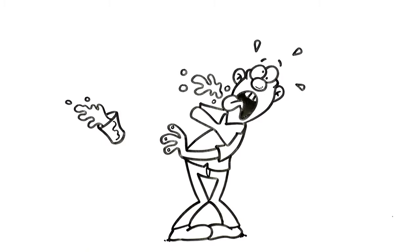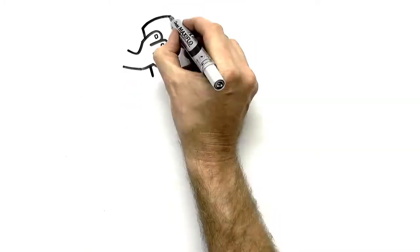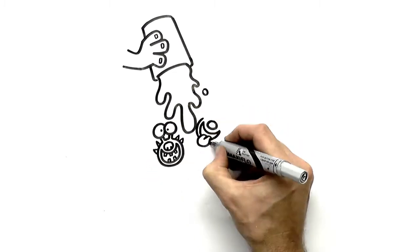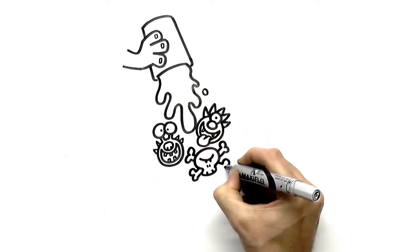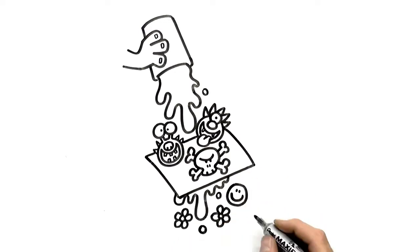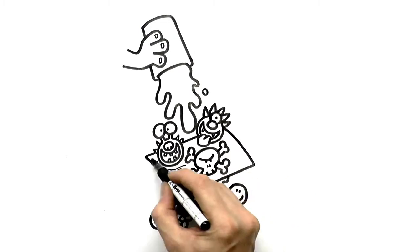This is where our toddler comes in. Using the same amazing ability to control the flow of liquids in diapers, very fine non-woven filters allow water molecules to pass through but stop the pollutants, enabling clean water to be extracted.